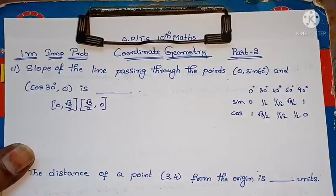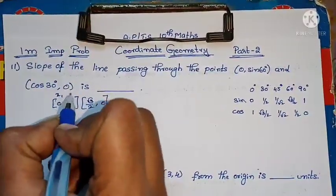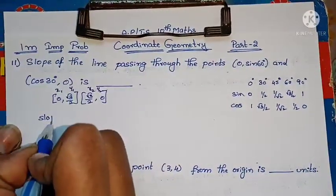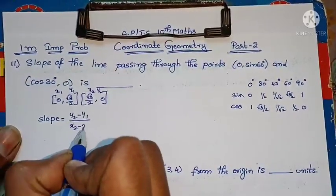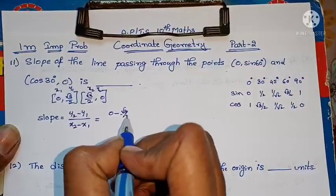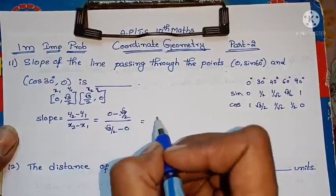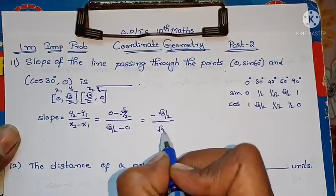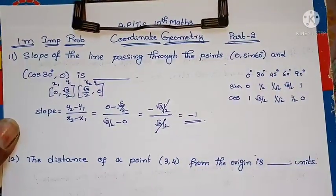Now we have two points. For slope, the formula is (y2 - y1)/(x2 - x1). This is x1, y1 and this is x2, y2. For one mark, we don't need many steps, directly: slope equals (y2 - y1)/(x2 - x1) = (0 - √3/2)/(√3/2 - 0) = (-√3/2)/(√3/2). Cancel √3/2, so slope equals -1. That's our answer.